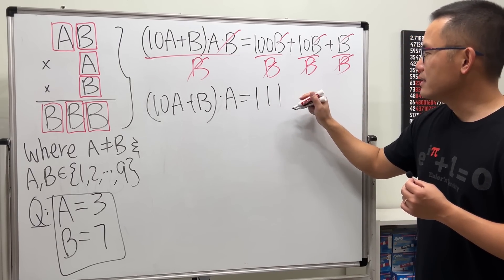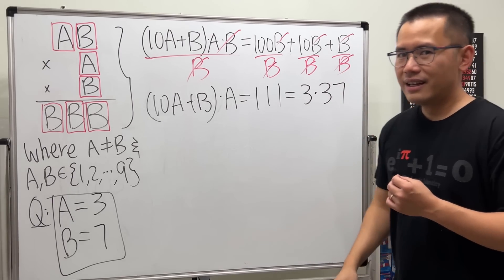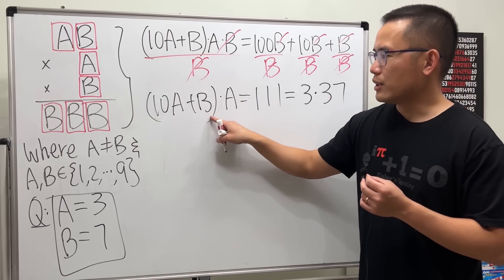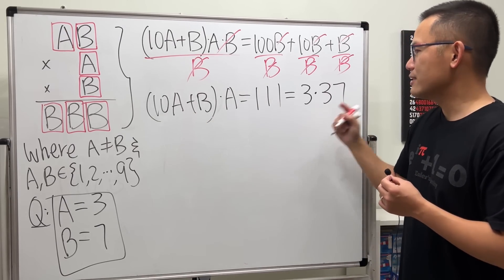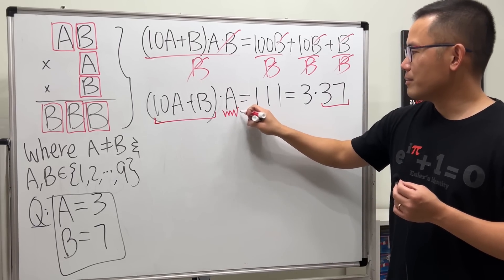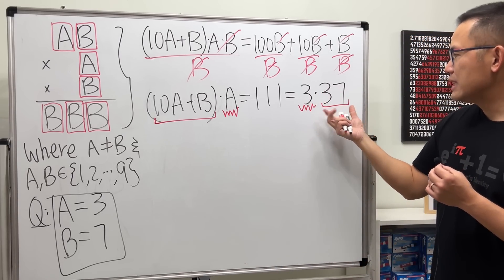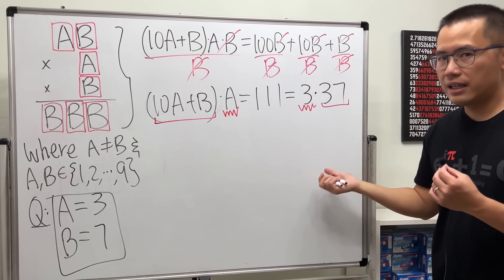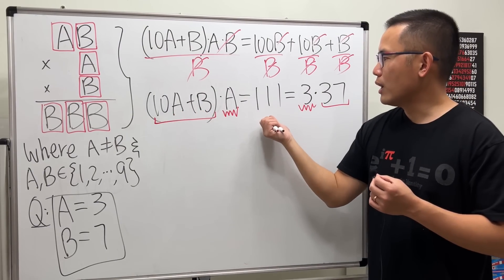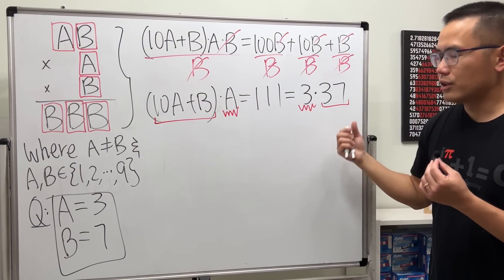Now we can just kind of match it. This right here is a two-digit number, well that has to be equal to 37. And then A, it's a single digit number, so that has to be equal to 3. And in fact, both 3 and 37 are prime so we cannot break it down anymore. And we cannot say this is equal to 111 because this is two digit, 111 is three digits. So this is the only possibility.